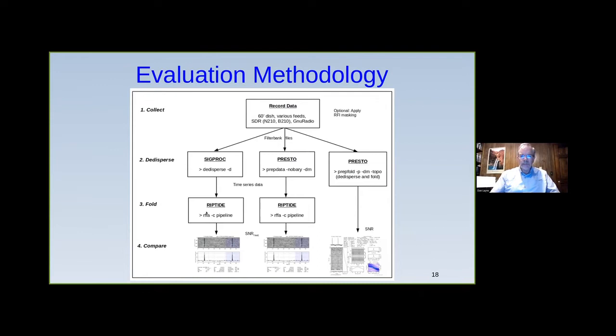Going back to B0835-41: this is what the pulse looks like once processed through the software. It's actually a nice pulsar with good strong SNR of 12.7. All aspects of the Presto plot look good, and Riptide shows a very strong pulse in both the phase and profile. They have close agreement on the period. I'm building confidence that Riptide works and I'm starting to understand it, as well as Presto.